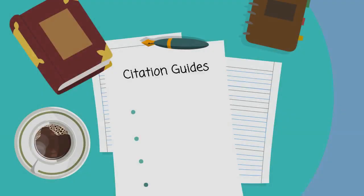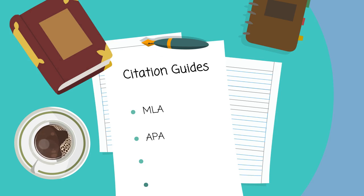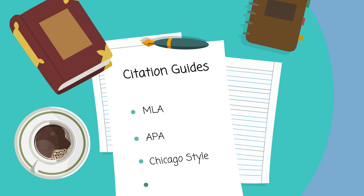There are many different guides to citing documents, such as the Modern Language Association Guide, often used in the humanities, the American Psychological Association Guide, used in social sciences, the Chicago Style Guide, used by historians, and finally the Council of Science Editor system in the sciences.